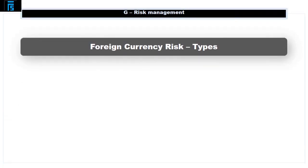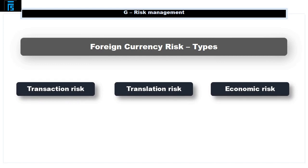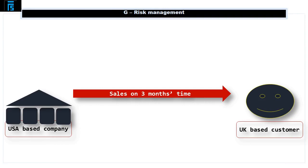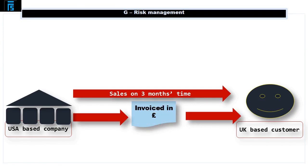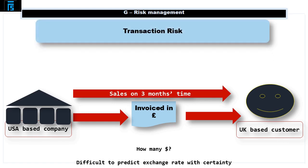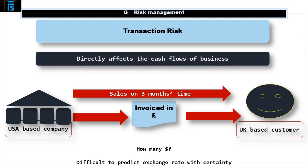Foreign currency risk can be one of three types: translation risk, transaction risk, and economic risk. Suppose we are based in the USA and we sell something to someone in the UK. If we give our UK customer three months credit and we're invoicing them in sterling, we don't know how many dollars that sterling is going to be worth when they pay in three months' time, because the exchange rate will move in a way we can't predict with any certainty. This is known as transaction risk — it directly affects the cash flows of the business, and we will end up with more or less dollars as a result.